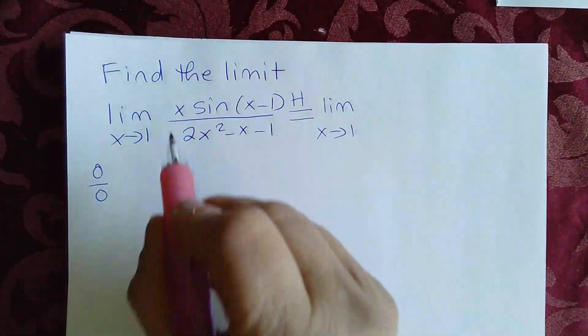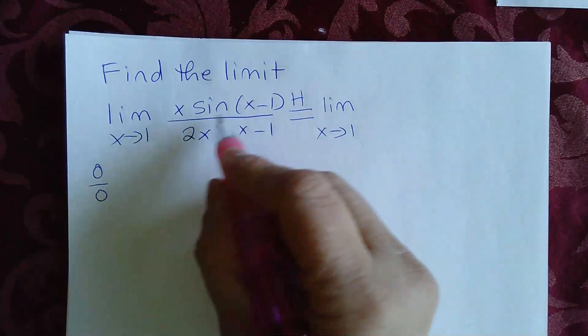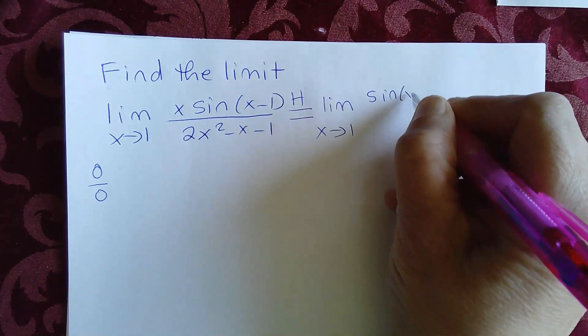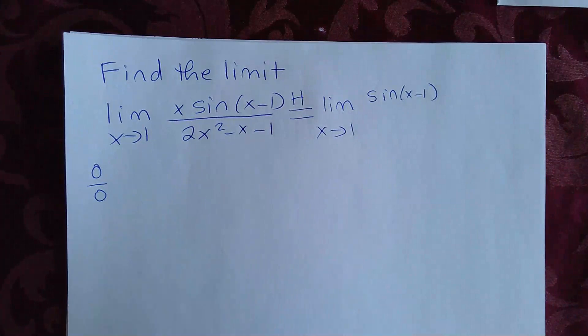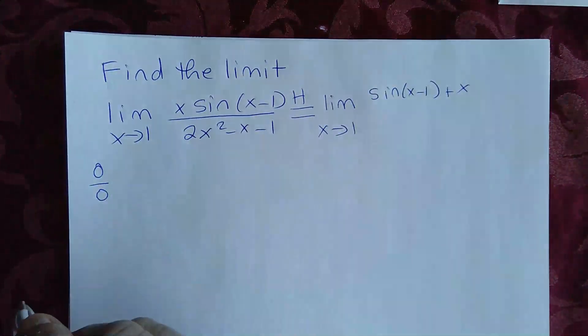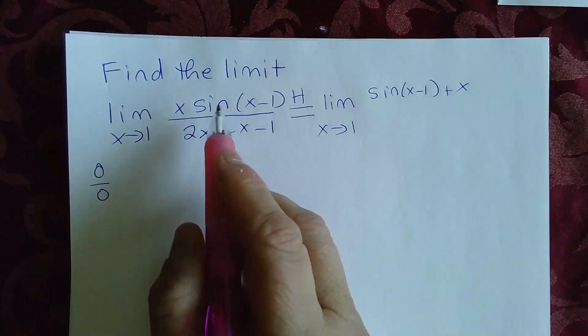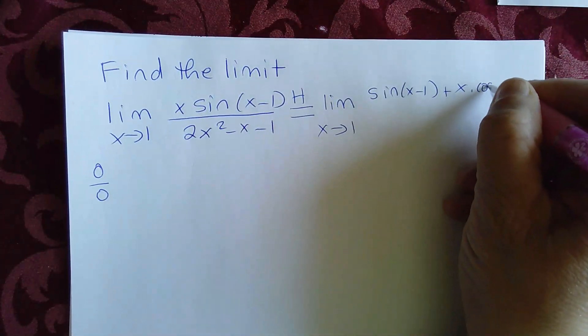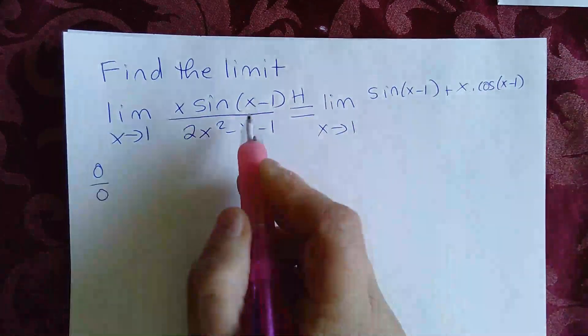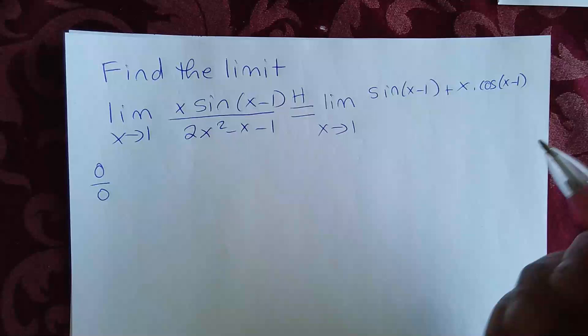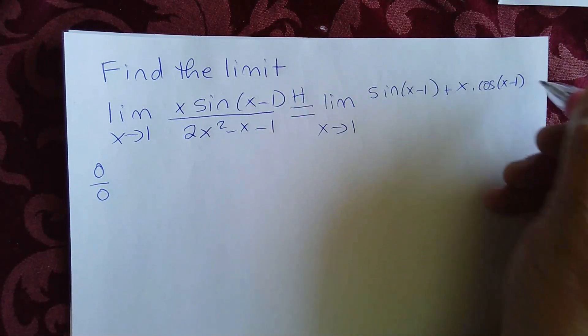So let's go ahead and do that. The derivative of x is 1, 1 times sine(x-1) is sine(x-1) plus x times the derivative of sine(x-1). The derivative of sine(x-1) is cosine(x-1). The derivative of the inside here is simply 1. So we don't have to write anything, or if you want to put 1 here, that's fine too.